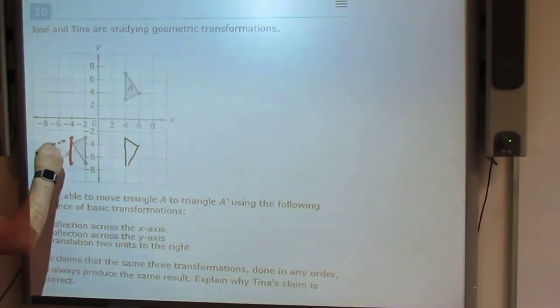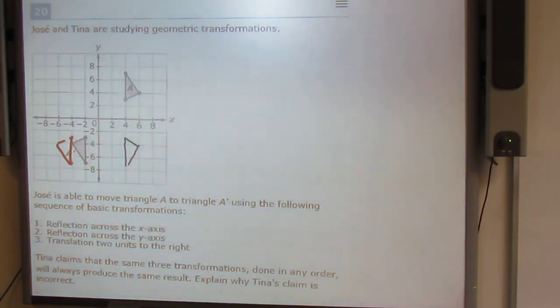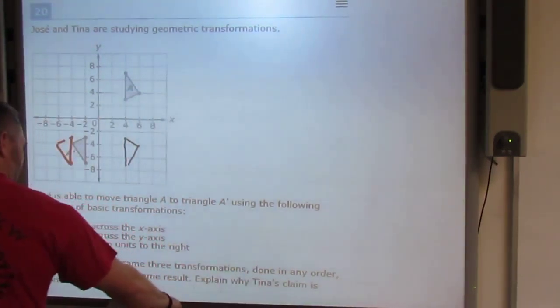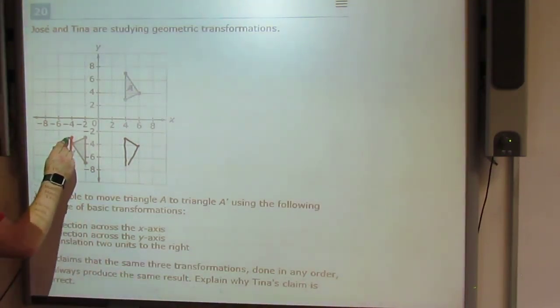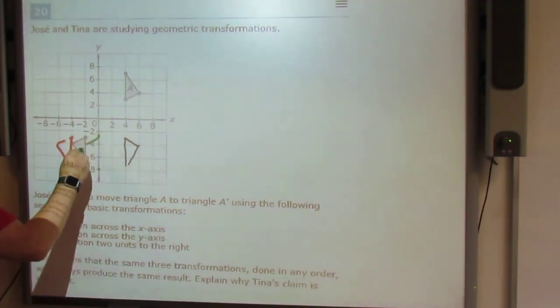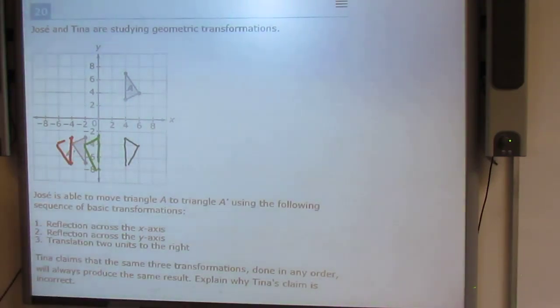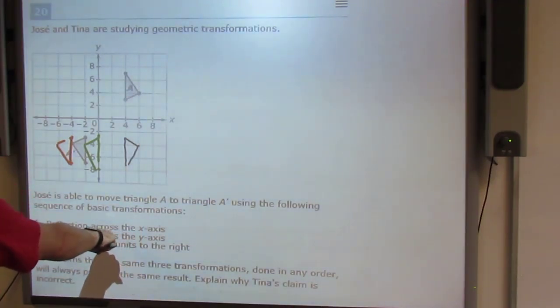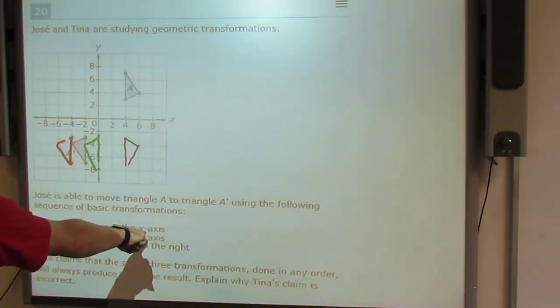And then translate two units right. And two units right, which is kind of funky here, would put me back to here. Wouldn't even be correct to begin with. But even if it were correct, right? Because this would flip right here. It said reflection across the x-axis.